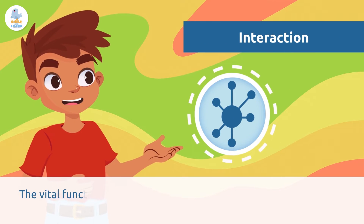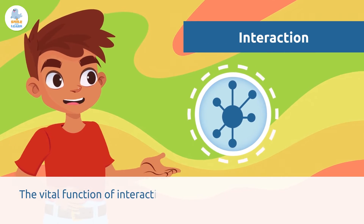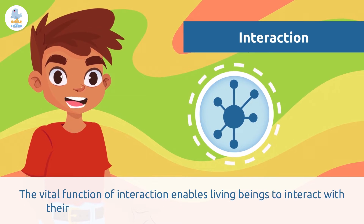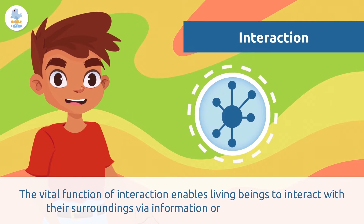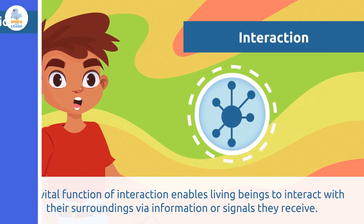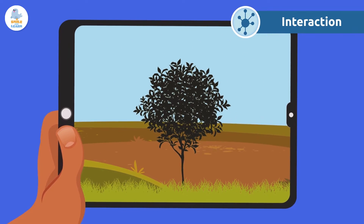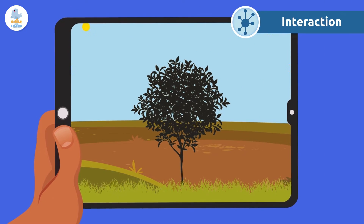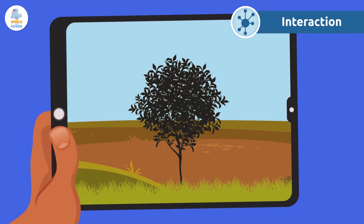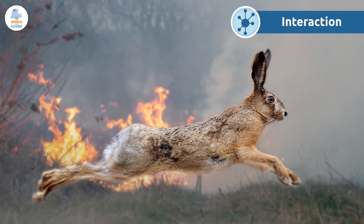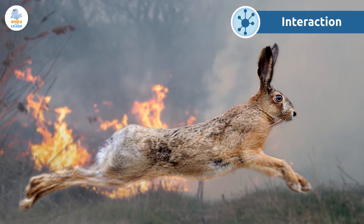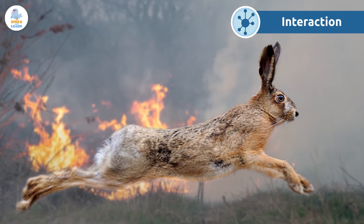The vital function of interaction enables living beings to interact with their surroundings via information or signals they receive. This way, they can respond, act, or react depending on the situation. Fleeing from danger like fire is an example of how animals interact with their surroundings.